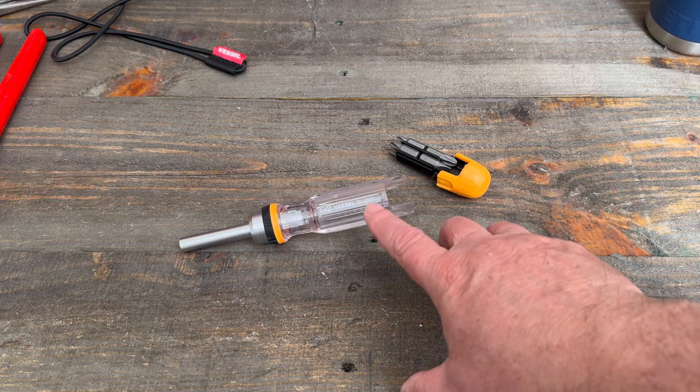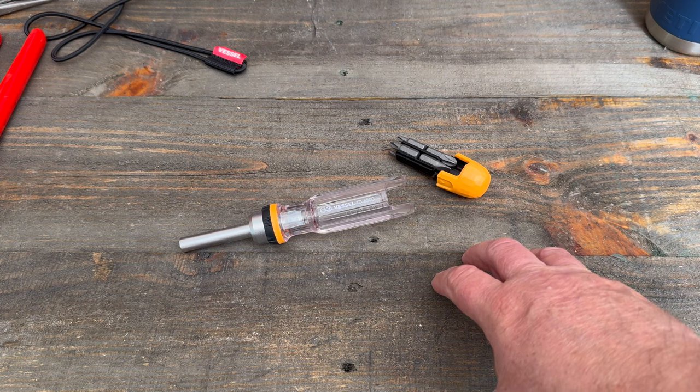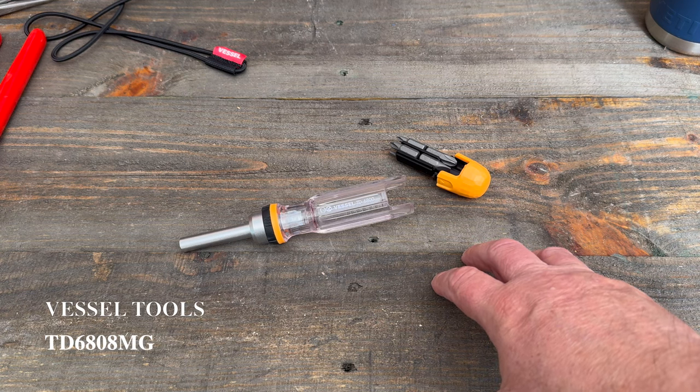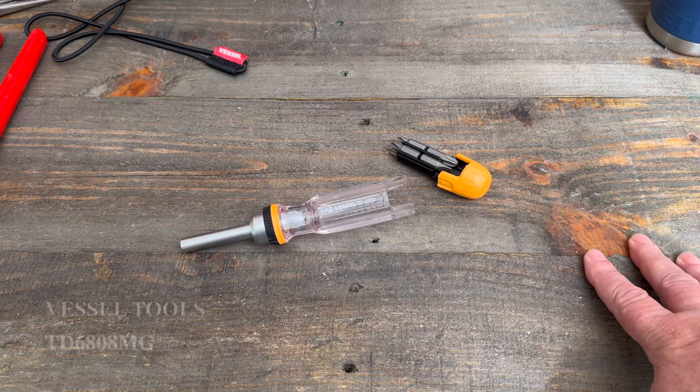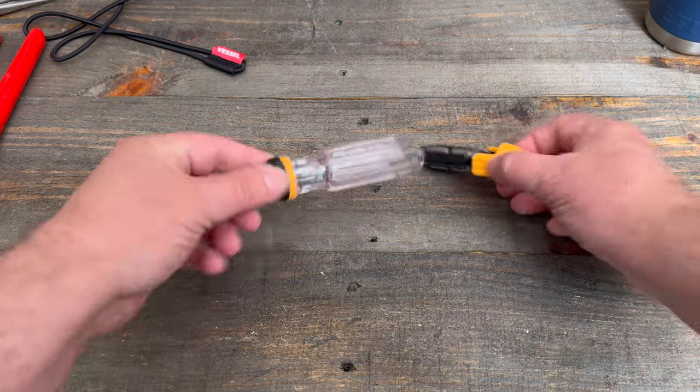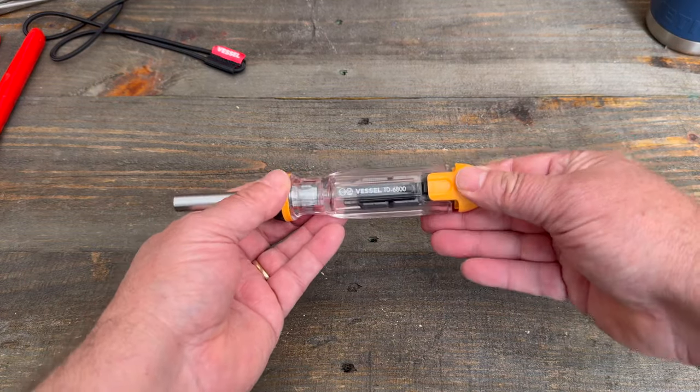On the side of the tool here it says TD6800. On the packaging it does say TD6808MG. So a little bit different there so I'm not sure which is the correct one. And basically it's a ratcheting screwdriver with a bunch of bits included.